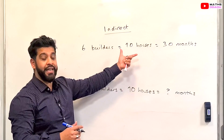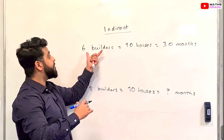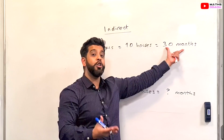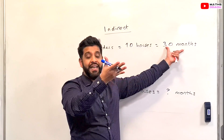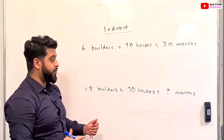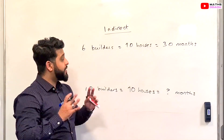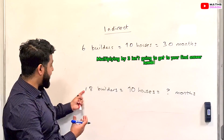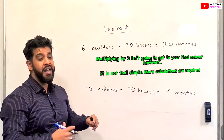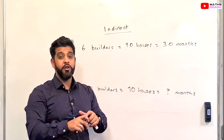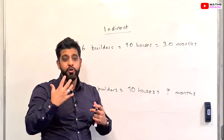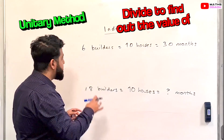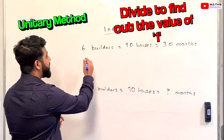The reason this is an indirect proportion question is that if you have more builders — say more than 6 — building the same number of houses, would you expect it to take longer or less time? Of course it would take less time, because you've got more builders on site. You could spot that 6 times 3 equals 18, but let's use the unitary method consistently so you can apply it everywhere.